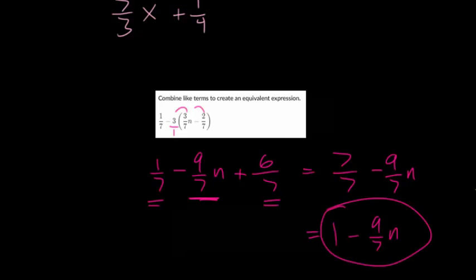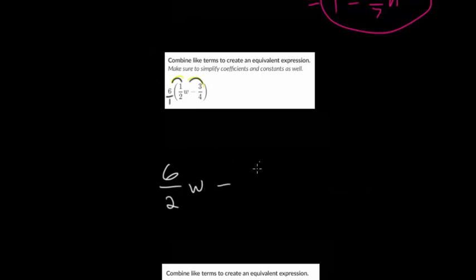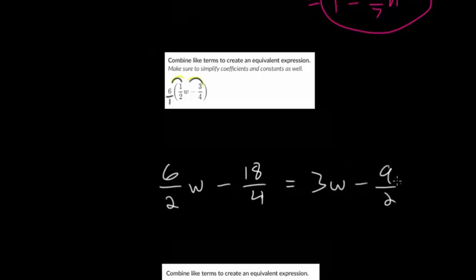Moving to the next problem, we again have to distribute, multiplying six into both expressions. We write this as six over one. Distributing to the first fraction: six times one over one times two gives six over two times W, which simplifies to three W. For the second term: six times three is 18 over one times four is four. We can simplify 18 over four — each is divisible by two — to get three W minus nine over two.